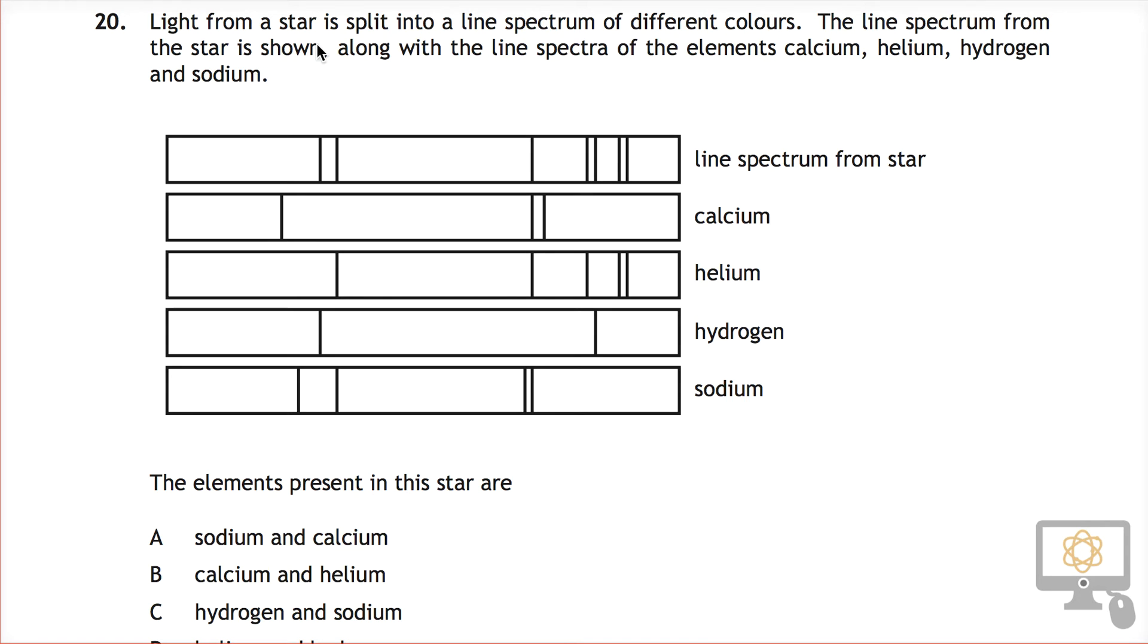It says light from a star is split into a line spectrum of different colours. So there's the line spectrum from the star. This shows us the different colours ranging from maybe red on one side to blue on the other side.